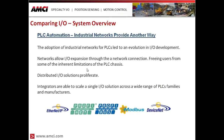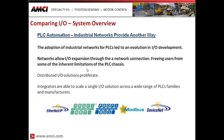In the early 90s, industrial networks were adopted as part of the PLC system, providing another way of adding IO. This led to an evolution in IO development — networks allowed IO expansion through the network connection, freeing users from the inherent limitations of the PLC chassis, which was essentially how much IO you could add. With this, distributed IO solutions started to proliferate. No longer were you beholden to that particular PLC manufacturer for selecting IO types, as third parties started to develop options for integrators.